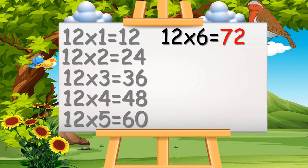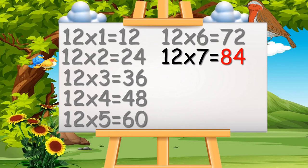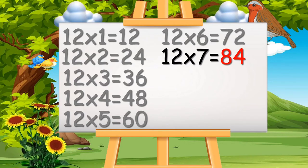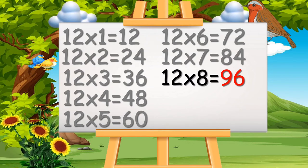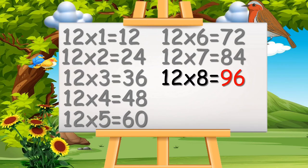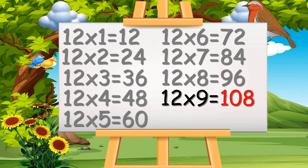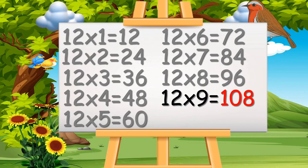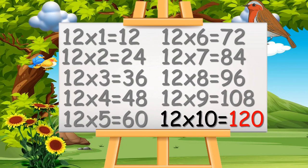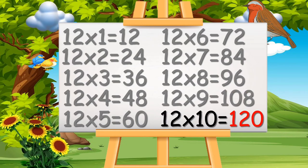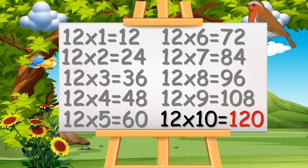12 sixes are 72. 12 sevens are 84. 12 sevens are 84. 12 eights are 96. 12 eights are 96. 12 nines are 108. 12 tens are 120. 12 tens are 120.